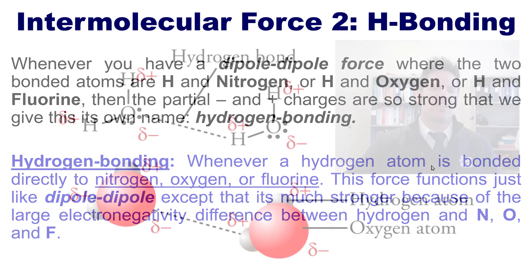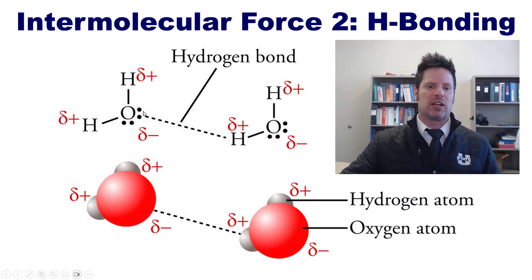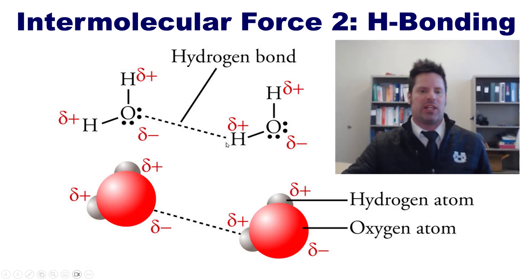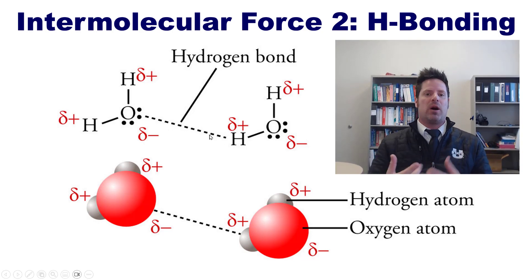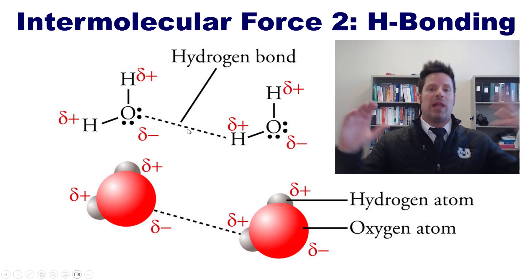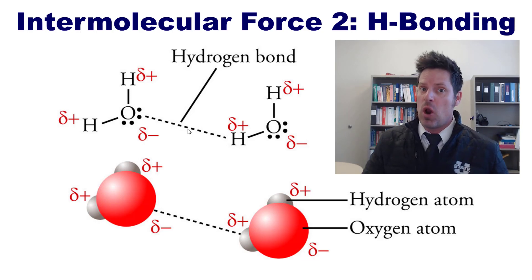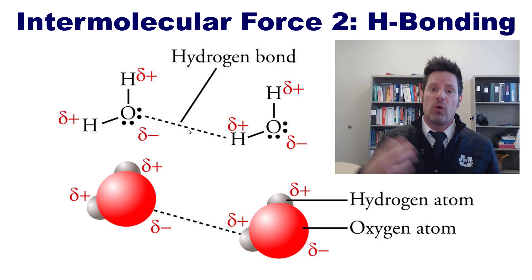As an example, this diagram shows how the partial minus on one oxygen in one H₂O molecule will bond intermolecularly through a hydrogen bond with the partial plus on a neighboring hydrogen atom of a neighboring H₂O molecule. This bond is not a covalent bond — it's an intermolecular bond, a hydrogen bond, which is much weaker than a covalent bond, but still strong enough to allow H₂O molecules to stick to each other relatively tightly.